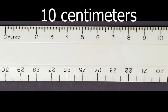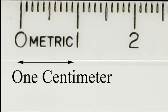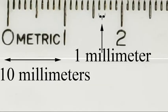To understand the relative size of an onion cell, observe a 10 centimeter ruler. Note the size of 1 centimeter and that each centimeter is subdivided into 10 millimeters.